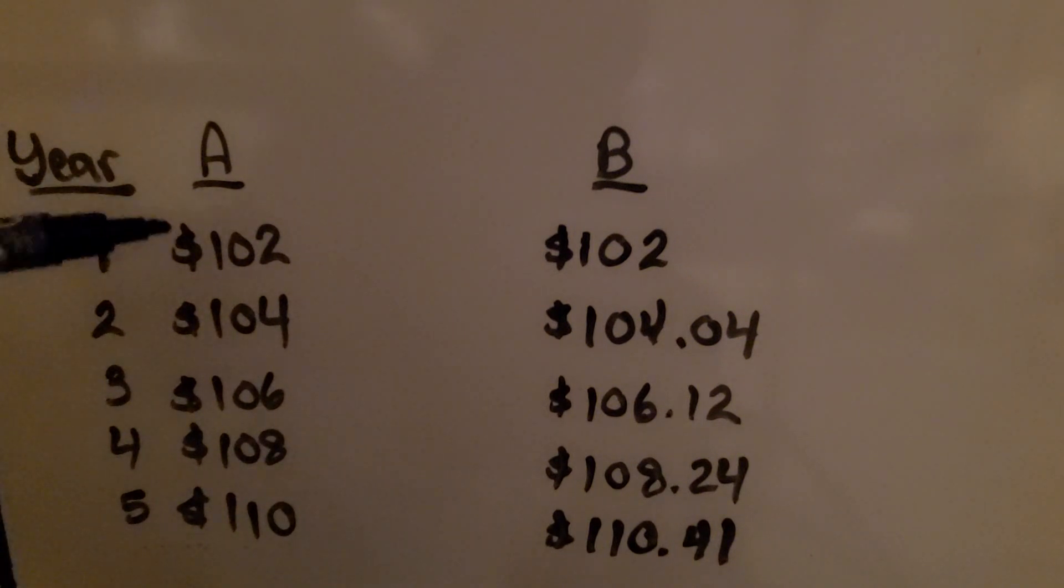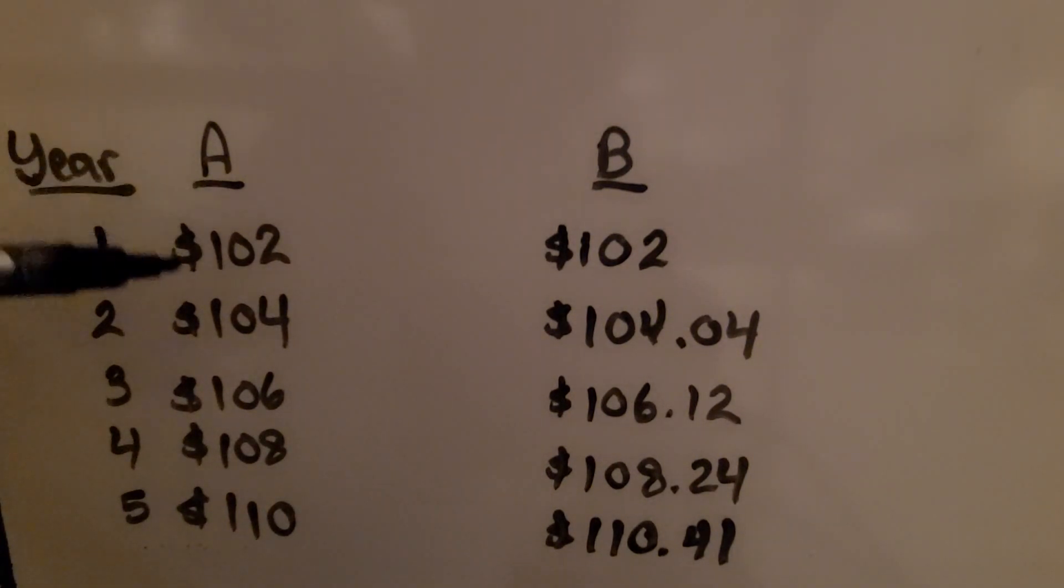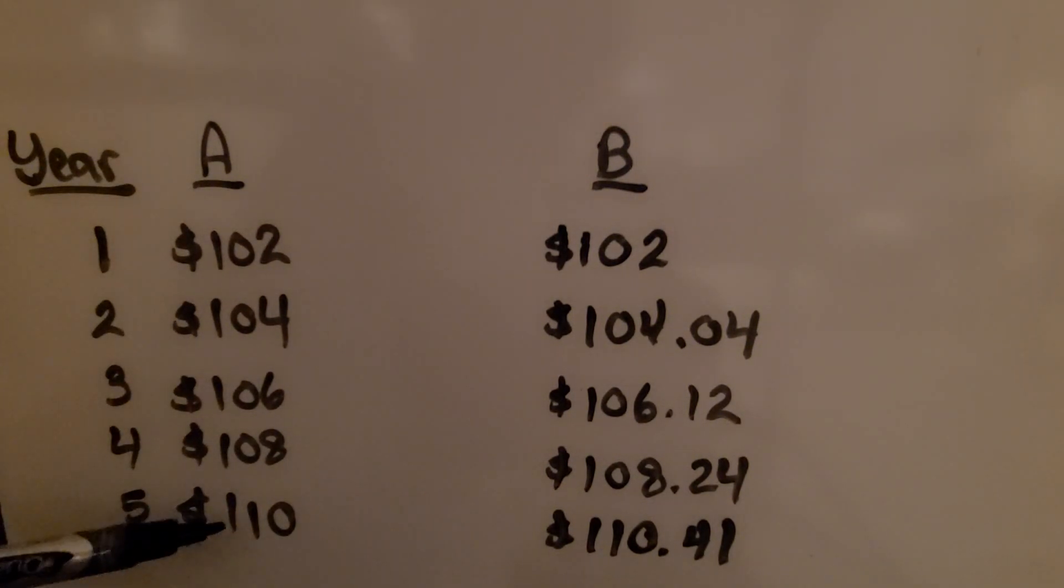For simple interest, we do 2% of $100, which is $102, and we just add $2 each year till the fifth year. We're at $110.